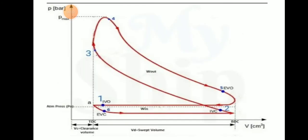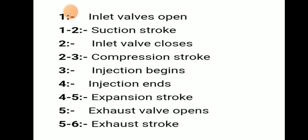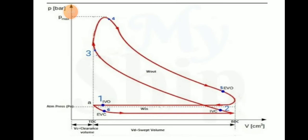Let's see the PV diagram of a 4-stroke IC engine. In the diagram, number 1 represents the inlet valve open, and number 2 represents the suction stroke during 1 to 2. Then at point 2, IVC stands for inlet valve closed.